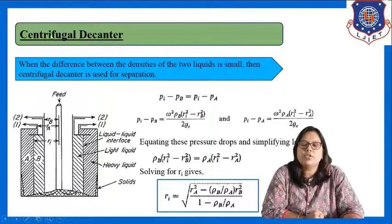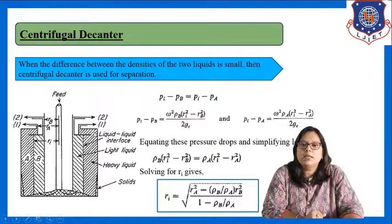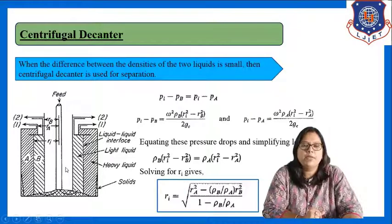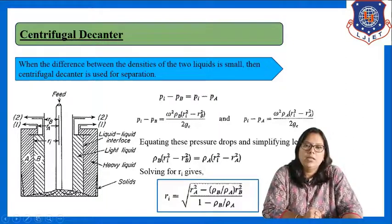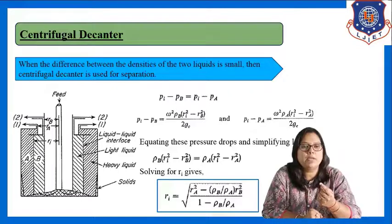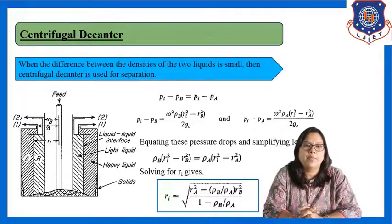Let us see the basic construction of the centrifugal decanter. This is the bowl in which the two immiscible liquids are separated. The feed enters from the middle of the bowl. After the two immiscible liquids enter, the bowl is rotated at high speed. As the bowl rotates at high speed, centrifugal force will be produced, and based on the density of the liquid, the liquid is thrown outward in the bowl. Here we have mentioned the radius of the bowl.